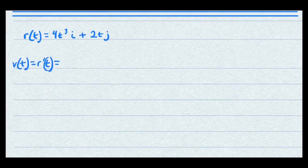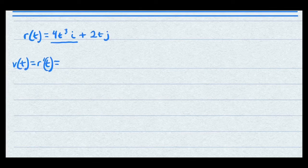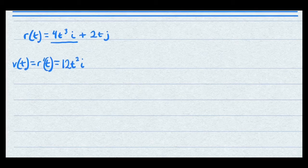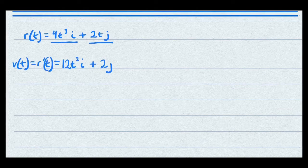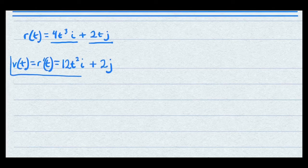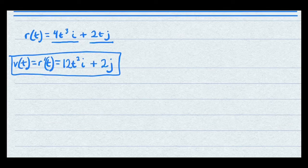What you want to do is take the derivative of each component one by one. We'll start with 4t cubed i. The derivative of this is going to be 12t squared i — just bring the i straight down. Bring down the plus sign and take the derivative of this part, which is just going to be 2, and bring the j down. So that's the first derivative. Since the first derivative is the velocity vector, we can move on to acceleration.